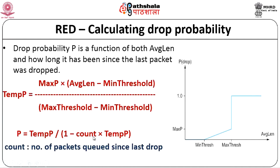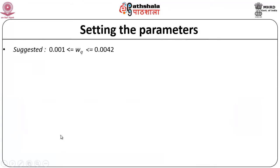When count increases, meaning packets have not been dropped for a long time, count × temp_p increases, so 1 − count × temp_p decreases, making the drop probability p larger. When count is small, just after a packet has been dropped, the drop probability is lower. This is basically how the drop probability is calculated in RED.